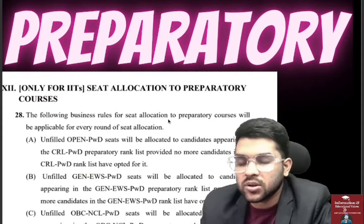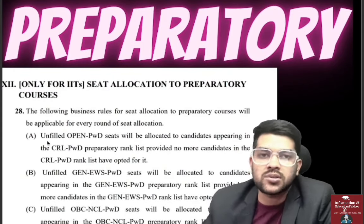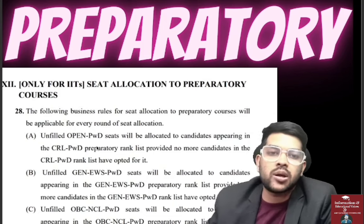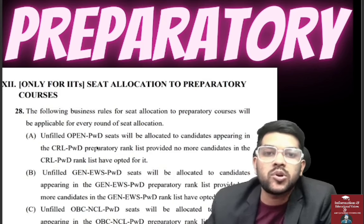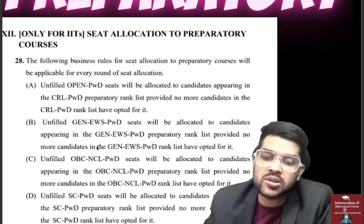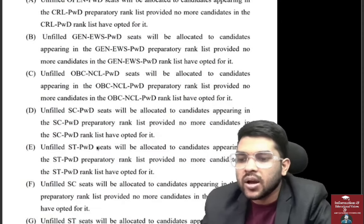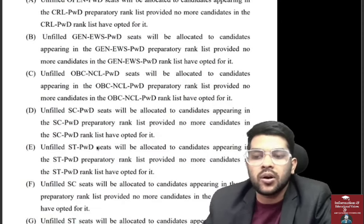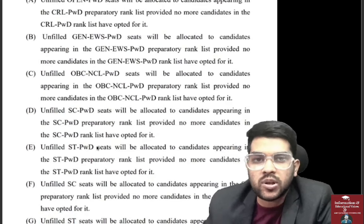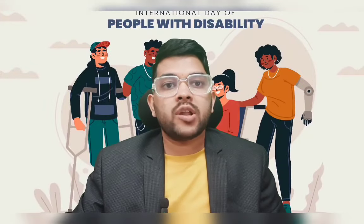No extra seats are added separately for preparatory courses. Instead, unfilled open PWD and general PWD seats will be given to general PWD preparatory rank students. Similarly, if there are two or three vacancies in general EWS PWD seats, those will also be given to preparatory rank students. The same type of thing applies to SC/ST students as well — if they are unable to clear the cutoff, they will also get a preparatory rank and a seat.